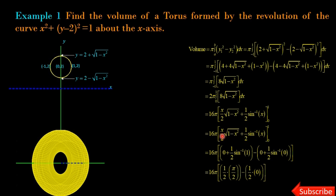Substituting the upper limit x = 1: the first term (x/2)√(1 − x²) = 0, and (1/2) sin⁻¹(1) = (1/2)(π/2) = π/4. At the lower limit x = 0: (1/2) sin⁻¹(0) = 0. So the result is 16π × (π/4) = 4π². This is the volume of the torus.